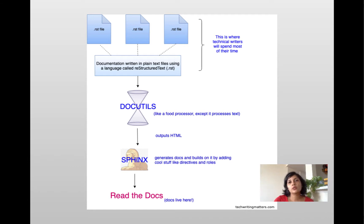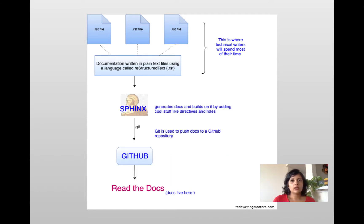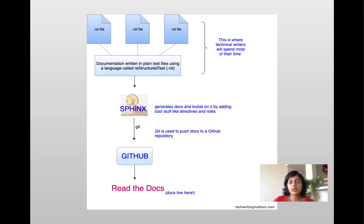Sphinx is a tool that sits on top of docutils to generate that documentation. And Read the Docs pulls the documentation in. This step is missing GitHub, so let me switch to another diagram. From my perspective, I've removed docutils because I haven't had to deal with it — it's already installed and works in the background. You take the docs and use Git to push them to a GitHub repository. Once the docs are living in a GitHub repository, you open a Read the Docs account, connect your repository to it, and the docs automatically flow into Read the Docs.